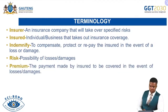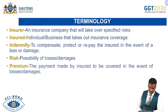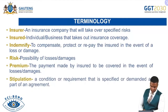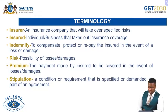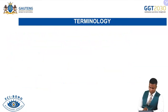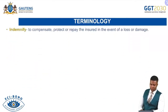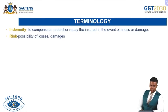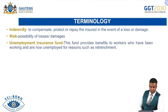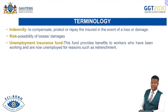'Premium' refers to the payment made by the insured to be covered in the event of losses or damages. 'Stipulation' refers to a condition or requirement that is specified or demanded as part of an agreement. Also, the Unemployment Insurance Fund is a fund which provides benefits to workers who have been working and are now unemployed for reasons such as retrenchment.